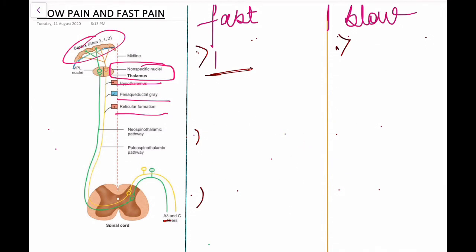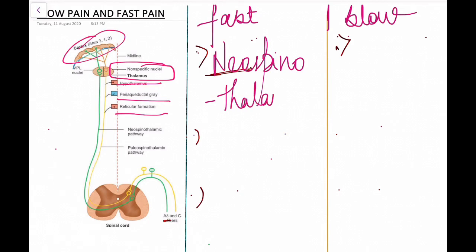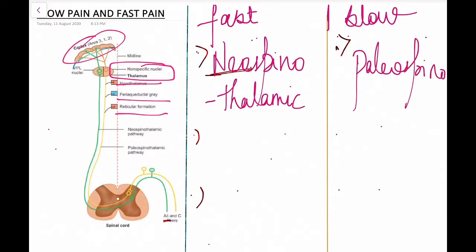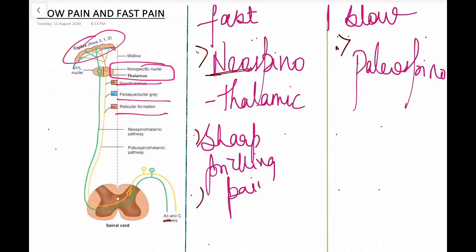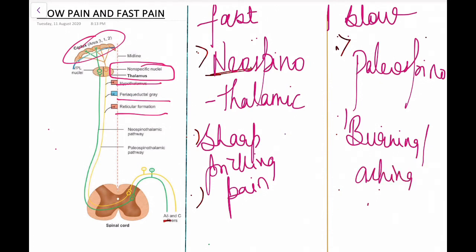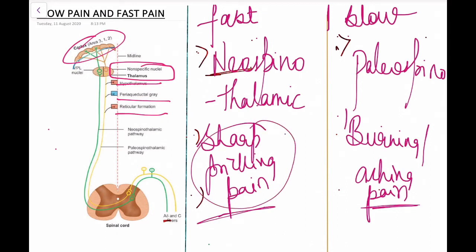Fast pain is carried by the neospinothalamic tract, whereas slow pain is carried by the paleospinothalamic tract. Fast pain is a sharp, pricking pain that arises very quickly and is easy to localize, whereas slow pain is a burning or aching pain. That is it for today, thank you.